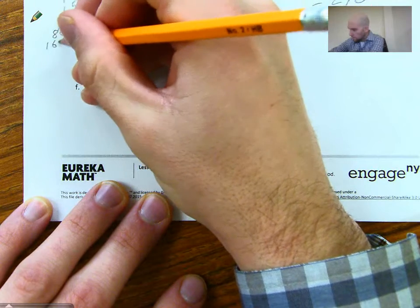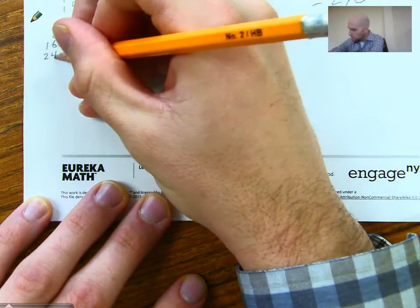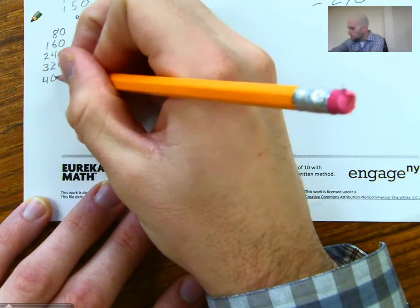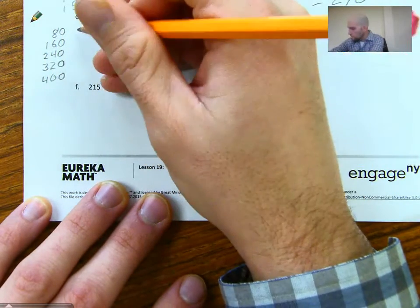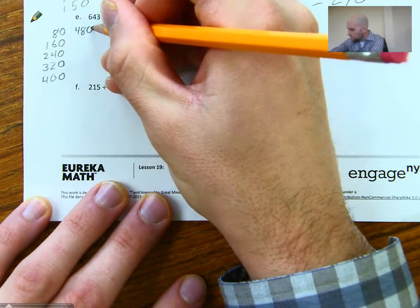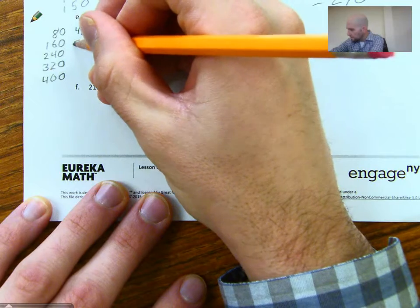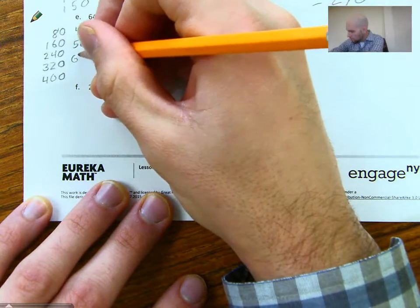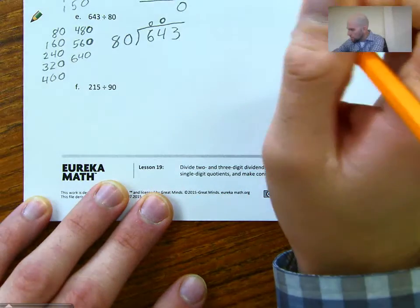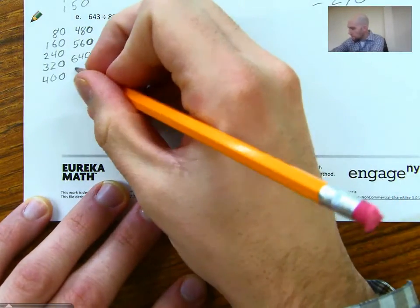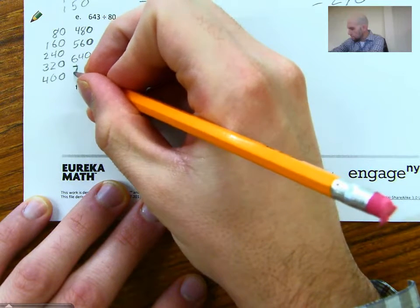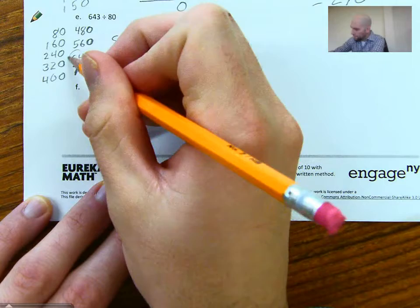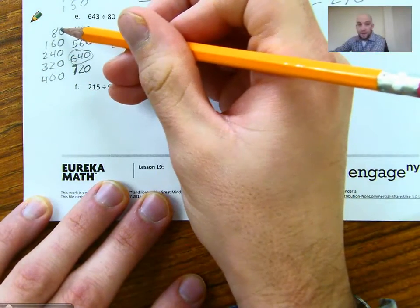So how many times we'll have to skip count by 80 or by 8. 80, 160, 240, 320, 400, 480, 560, 640. I'm pretty close, but I haven't reached 643 yet. 720. Okay, that's above 643. So I know 640 is as far as I'm going to be able to go.